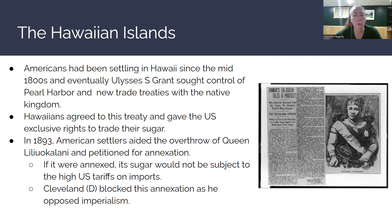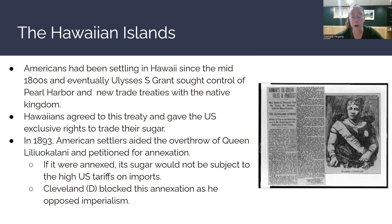Americans had been settling in Hawaii since the mid-1800s, and eventually Ulysses S. Grant sought control of Pearl Harbor and new trade treaties with the Native Kingdom. Hawaiians agreed to this treaty and gave the US exclusive rights to trade their sugar. Hawaiian sugar becomes very lucrative very quickly. Americans are going there to extract the sugar, trading it, and making money. In 1893, American settlers aided the overthrow of Queen Liliuokalani, and the Americans petitioned for annexation.